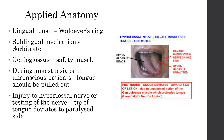The undersurface of the tongue has a mucus covering and this is utilized for sublingual medication. Typically for heart patients, a tablet called sorbitrate can be placed beneath the tongue for immediate relief, because it is rapidly absorbed through the mucosa of the tongue.